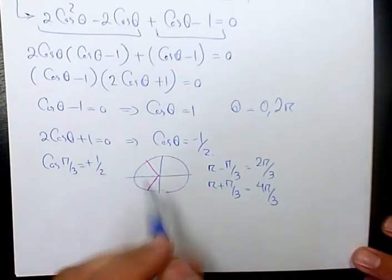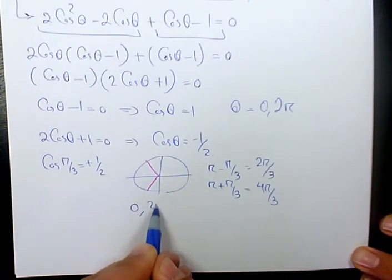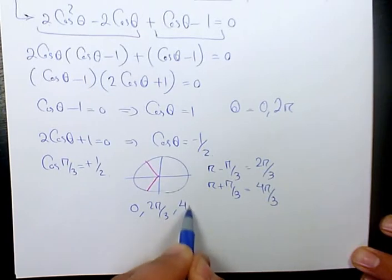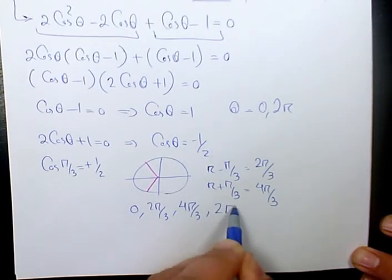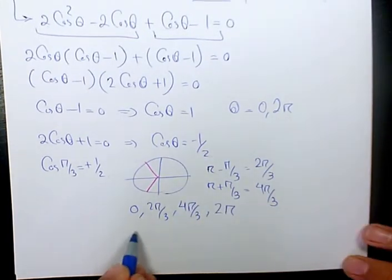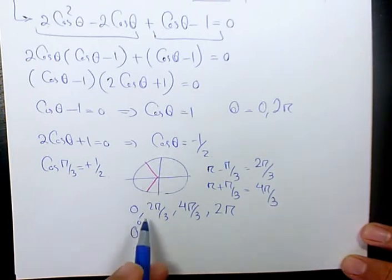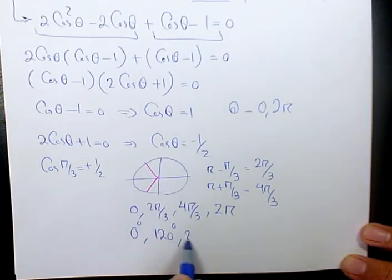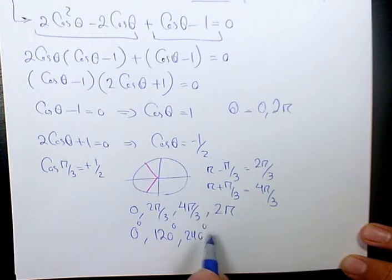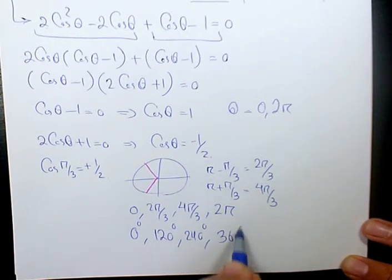So, we have four answers in total. 0, 2 pi over 3, 4 pi over 3, and 2 pi. Which will be 0 degrees. Here, this one is going to be 120 degrees, 240 degrees, and 360 degrees.